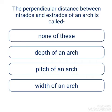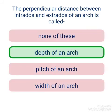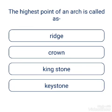The perpendicular distance between the intrados and extrados of an arch is called the depth of an arch. Options include: pitch, width, depth, or none. Additionally, the highest point of an arch is called the crown.